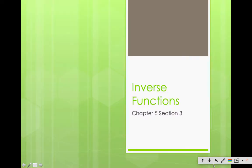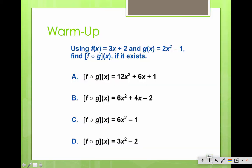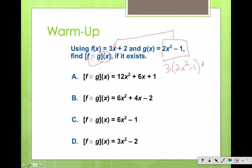Okay, here we go with inverse functions, chapter 5, section 3. This is good stuff here. A little bit of a review from the last stuff: if we want to talk about finding the fog and the gof, remember, this means we're going to take the g function and put it into the f function, which gives you 3 times 2x squared minus 1 plus 2. That looks like 6x squared minus 1.